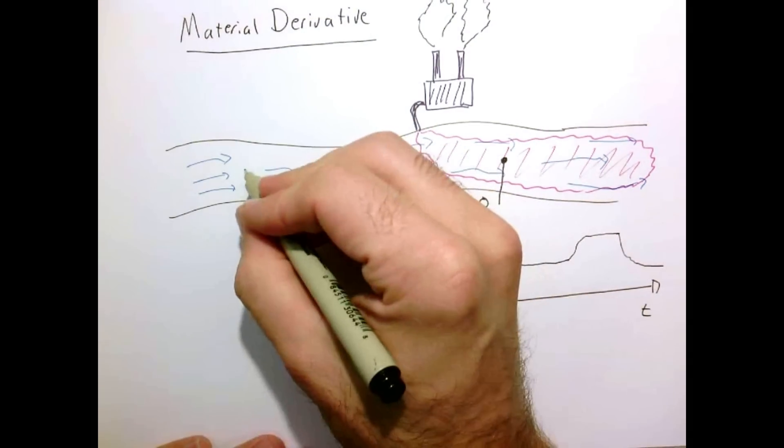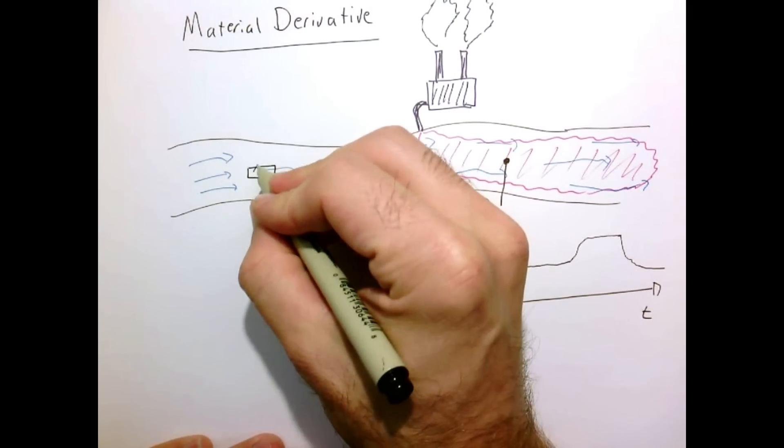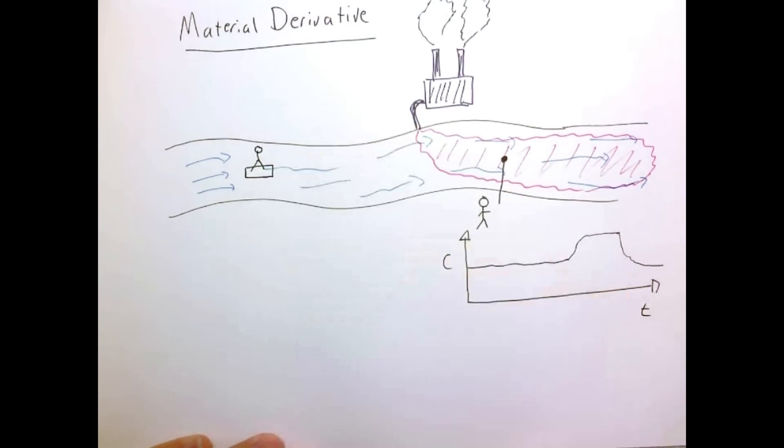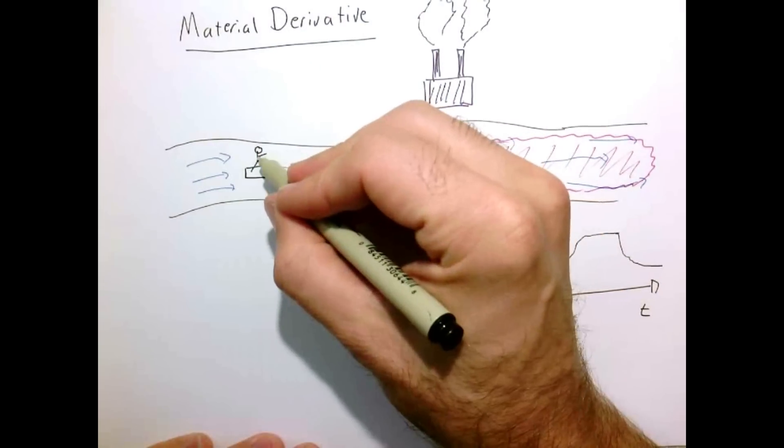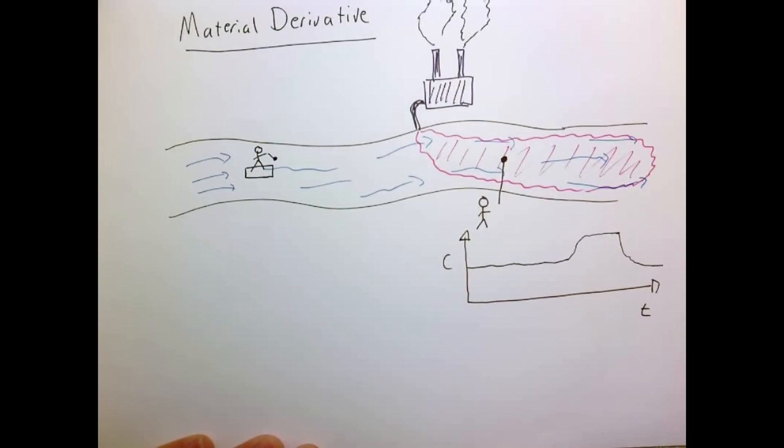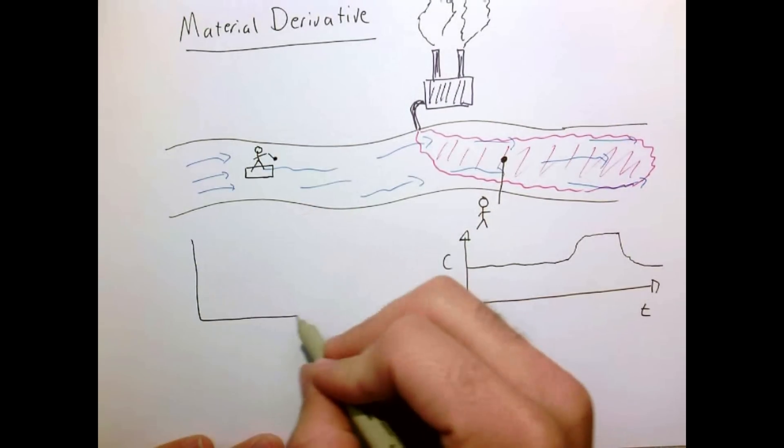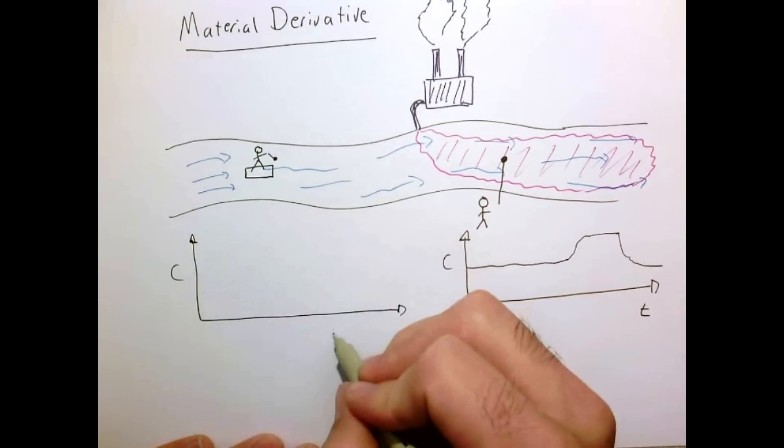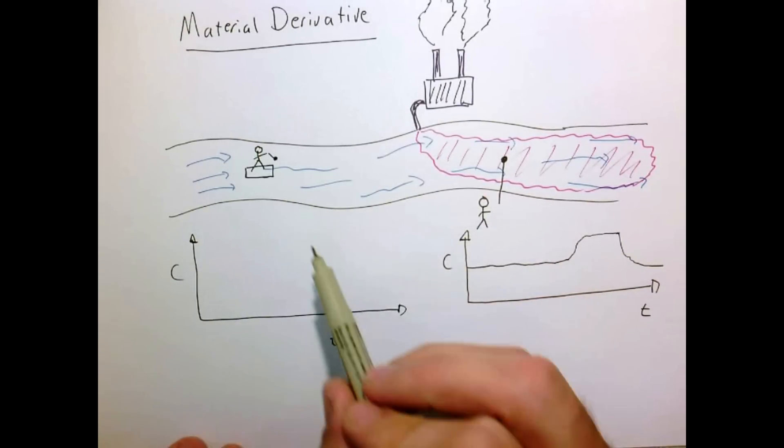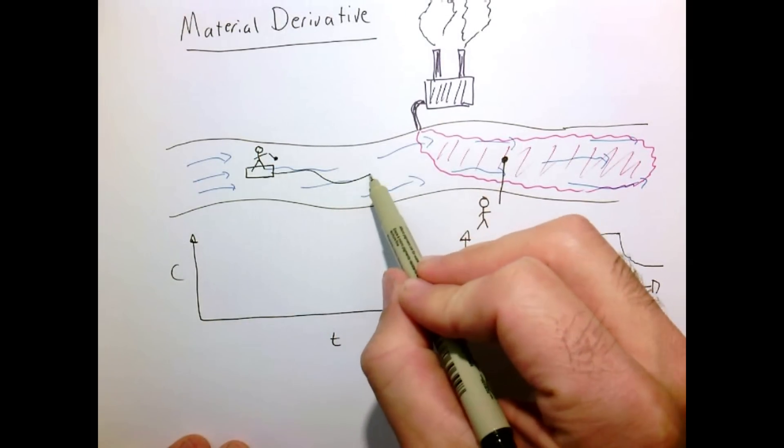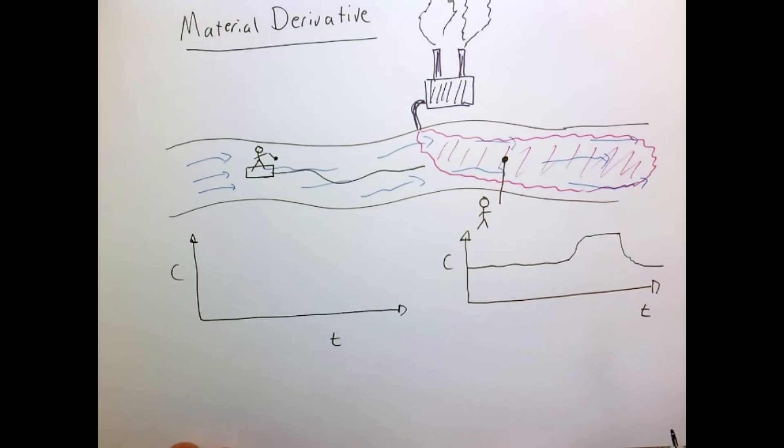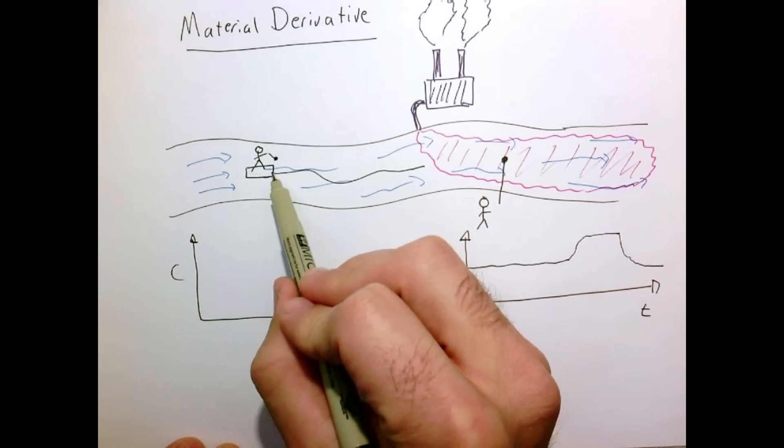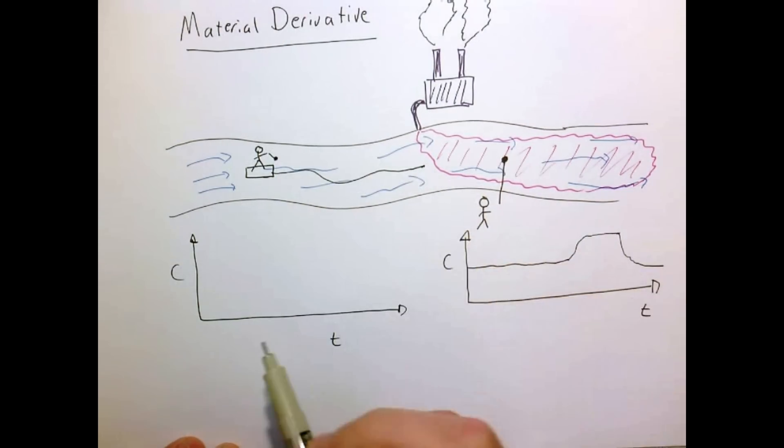You could also come along and do something similar but subtly different which is you could get a boat. You could deploy your sensor into the water and you could also measure the concentration as a function of time. But here you're not fixed. You're going to float down the river and you're going to go with the flow of the river so you're going to speed along. So maybe from your initial time to the time that you reach this point you're upstream of the factory. So your concentration that you record is zero.